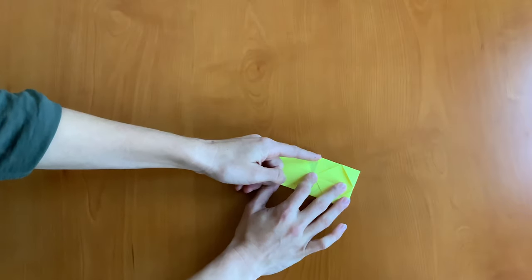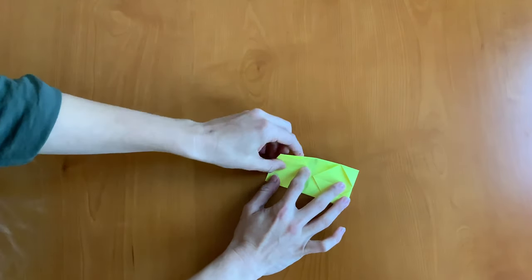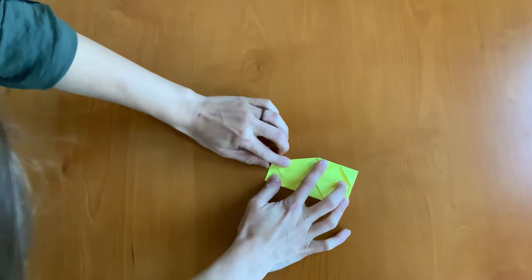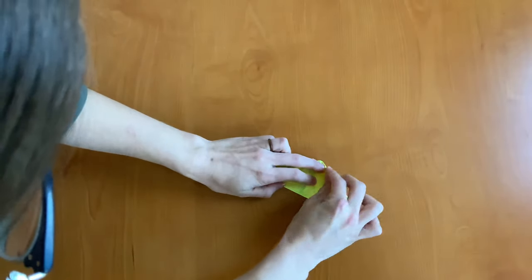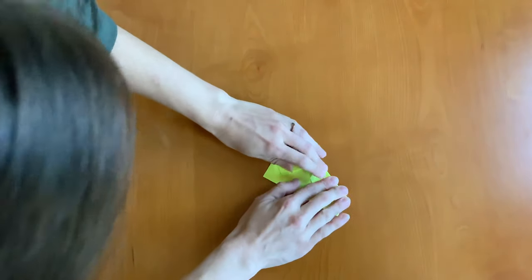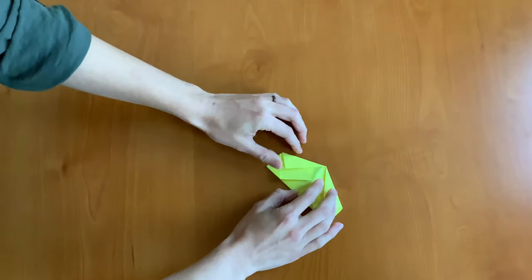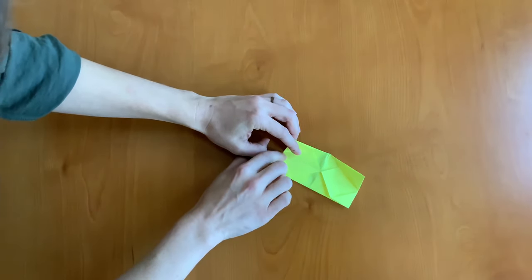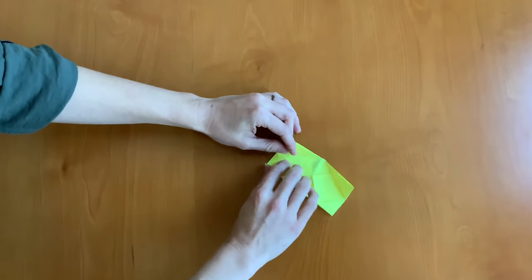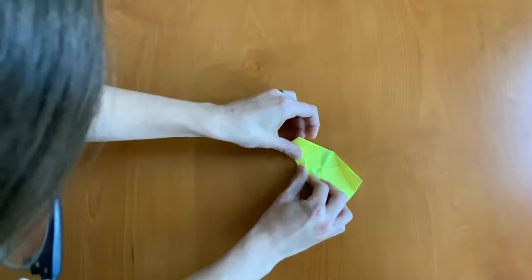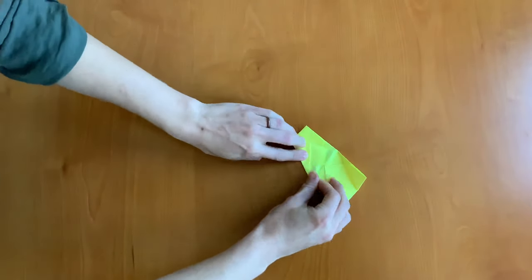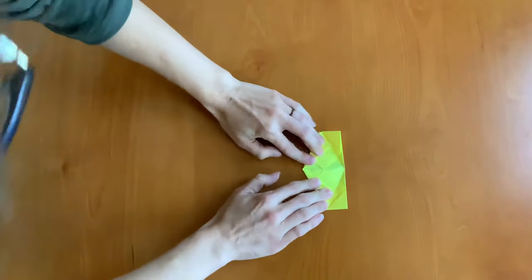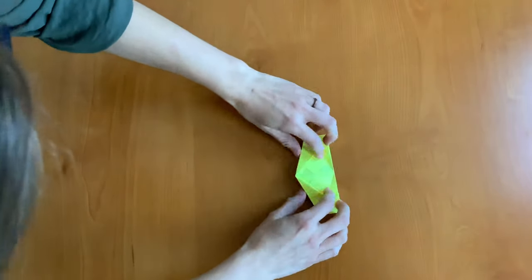Next, you want to create a line from the center top to the center on the side. So we're going to fold that in just like that. And do the same thing on the other side. And unfold those. And we want to do the same thing on the bottom. So folding, creating a line from the center left line to the center bottom line. And on the other side as well. And then unfold those.